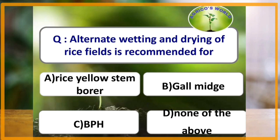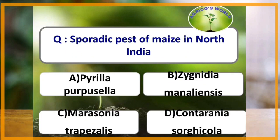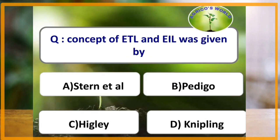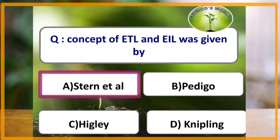Cowpea intercropped with cotton reduces the attack by spotted boll worm. Alternate wetting and drying in rice fields is a cultural method of control for which of the following pest? The answer is Brown Plant Hopper. Sporadic pest of maize in North India is Zyginidia manaliensis.